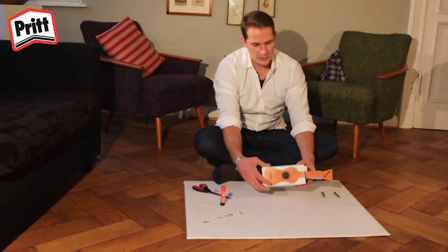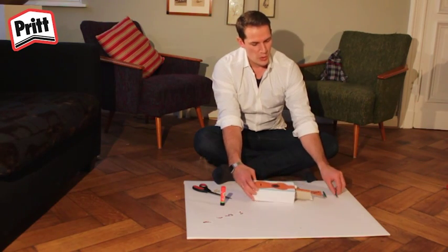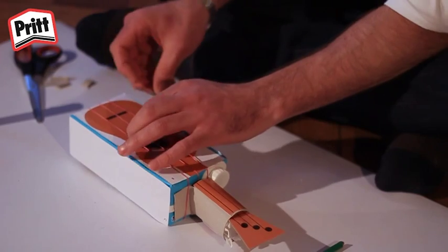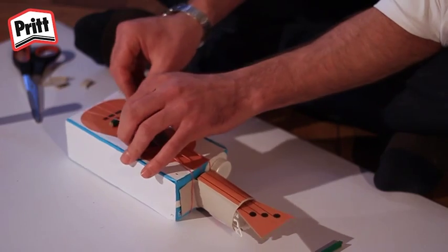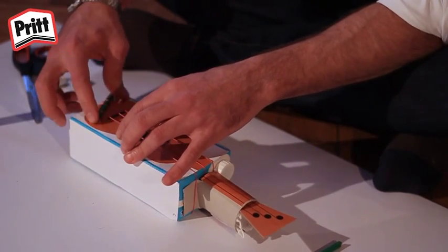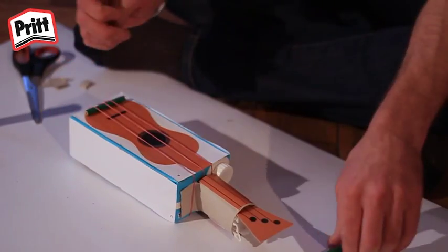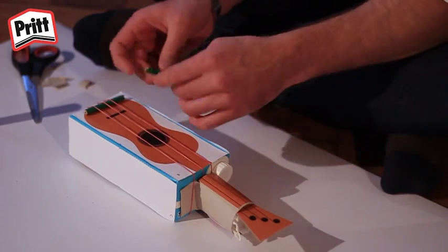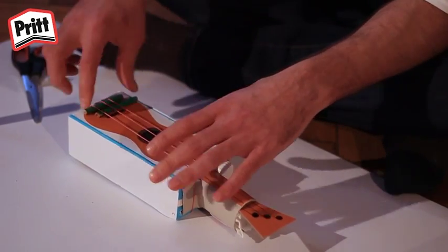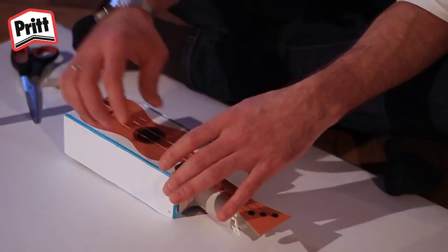Als je jouw ukelele hebt versierd, kunnen we aan beide uiteinden de korter gemaakte potloden onder de snaren van de ukelele plaatsen. Hierdoor worden de snaren van de doos opgeteeld en kunnen ze worden bespeeld.